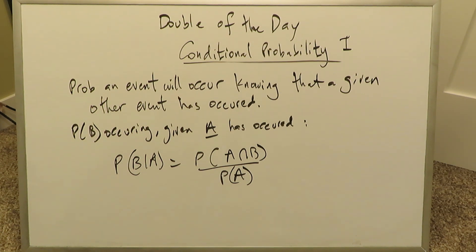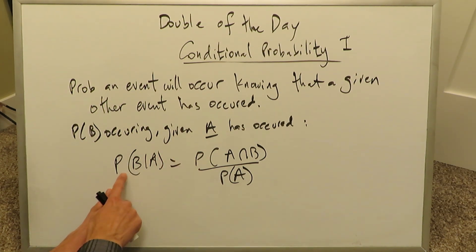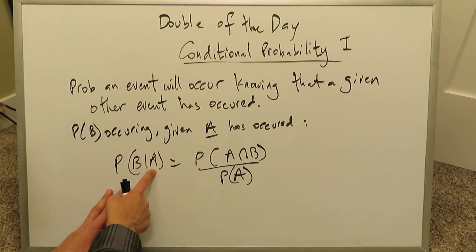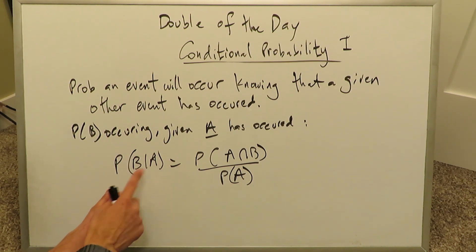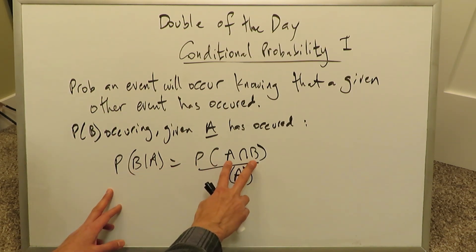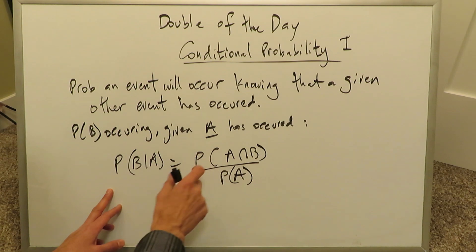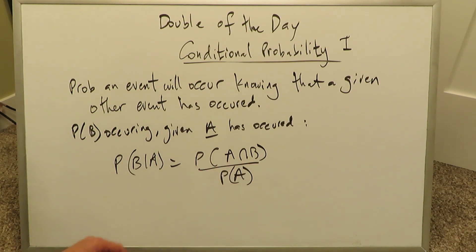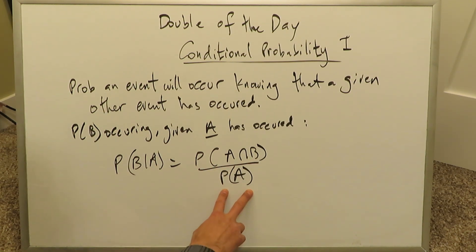How can you address this conditional probability concept? It is by means of this equation. The probability of B given event A has occurred is equal to the probability of A and B — or the intersection of A and B — divided by the probability of A, the event which has occurred.